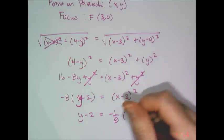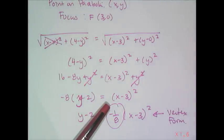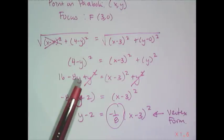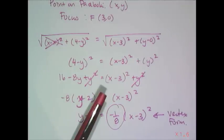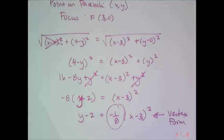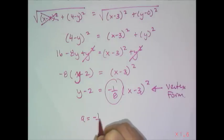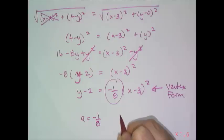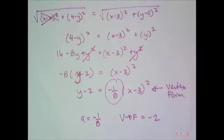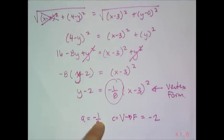I already knew the vertex from the relationship between the focus, vertex, and directrix. What I really want to know is where this negative one-eighth comes from. The a value is negative one-eighth, and the distance from vertex to focus — the c value — was negative 2. That's not enough data to see the pattern, so we're going to look at more parabolas to see if we can use c, the distance from the vertex to the focus, to find a without going through all this work.